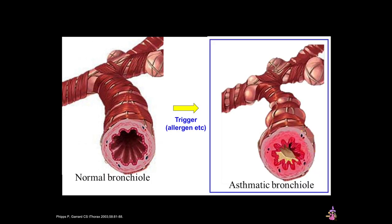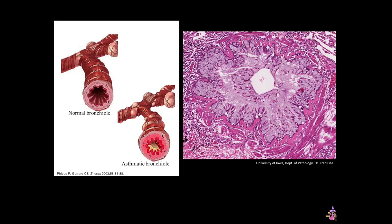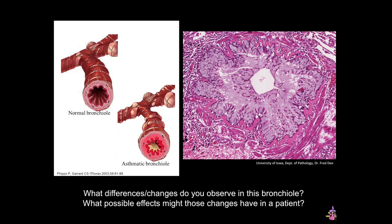Luminal obstruction and vasodilation also occur in asthma, as illustrated in the cartoon image on the right. Over time, the airways will undergo remodeling, which can add an irreversible component to this obstructive disease. The histological section on the right is from the lung of a patient with asthma. Pause the video and see whether you can identify changes in the features of this bronchiole as compared to a normal bronchiole.